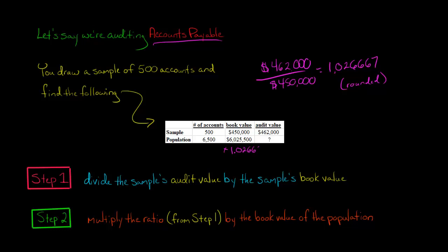1.026667. And that's going to give us, so right here, our product is going to be $6,186,200. That's going to be our implied audit value for the population.